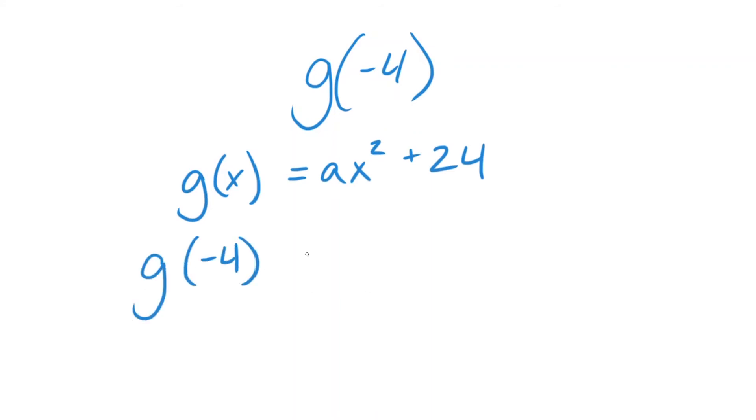So g(-4) actually means a(-4) squared plus 24. Therefore, the goal with this kind of problem is to end up with g(-4) equaling a number.